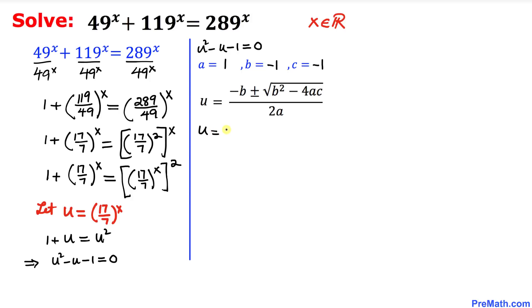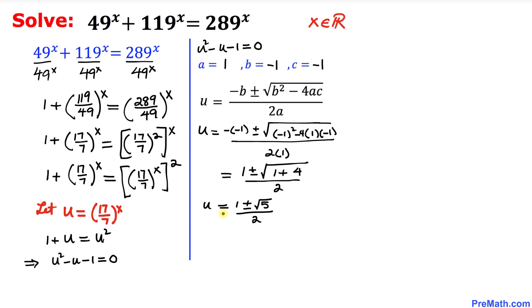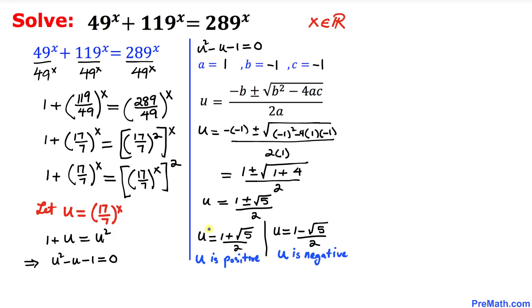With a = 1, b = -1, and c = -1, filling in the quadratic formula gives u = (1 ± √((-1)² - 4·1·(-1))) / (2·1), which simplifies to u = (1 ± √5) / 2. So the two values are u = (1 + √5)/2 and u = (1 - √5)/2.